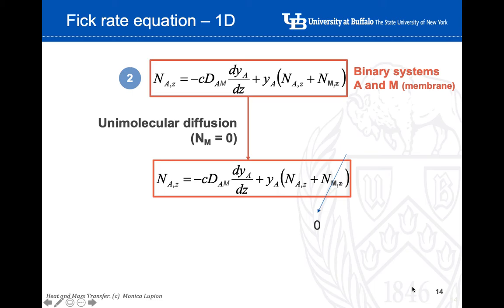What about the second equation, the Fick equation? If you consider a binary system of element A and M — M from the membrane — we can apply the Fick equation directly. The molar flux of element A is a function of concentration, the diffusivity of element A in the membrane, dY/dz, plus the convective mass transfer contribution. If we assume unimolecular diffusion — that only element A is being transported and the membrane itself is not moving — we can simplify by canceling the molar flux term for element M.